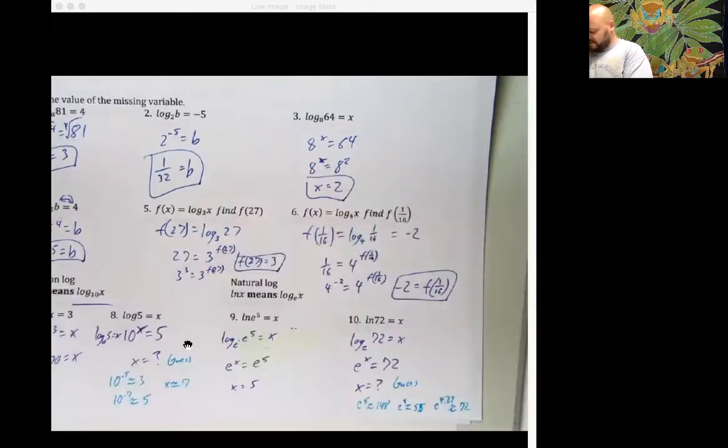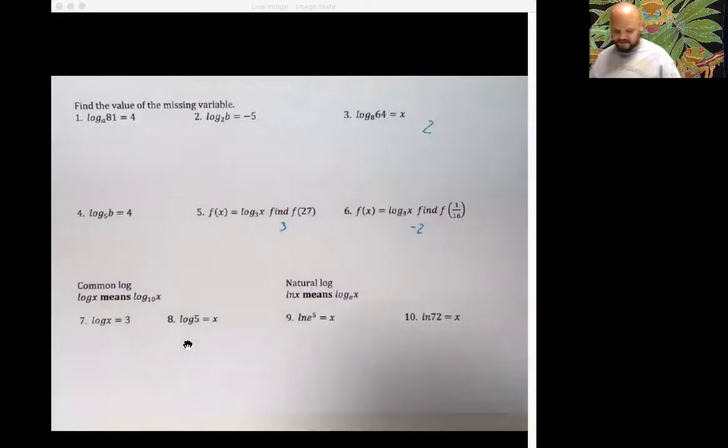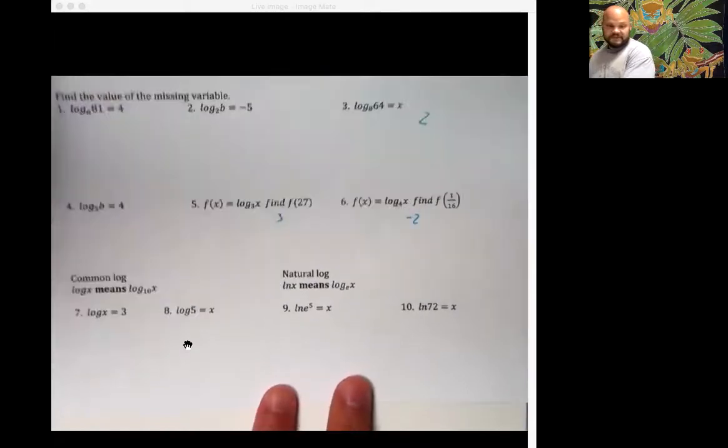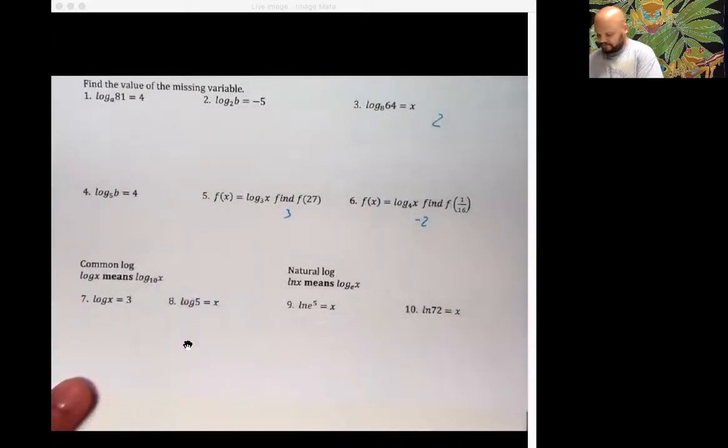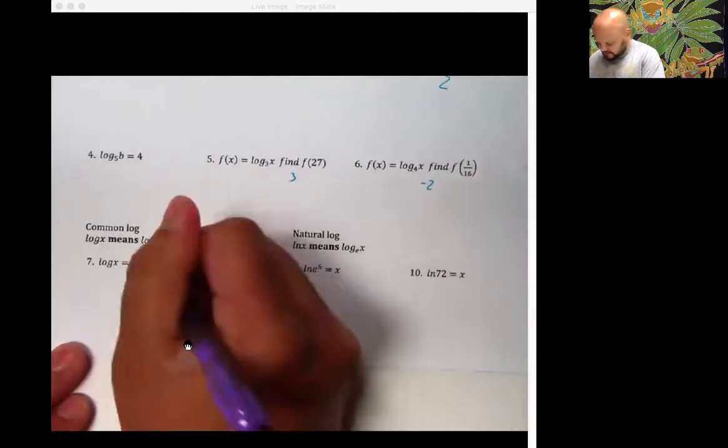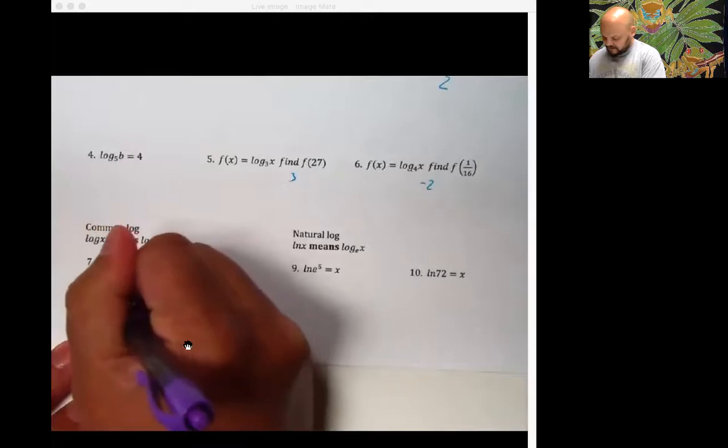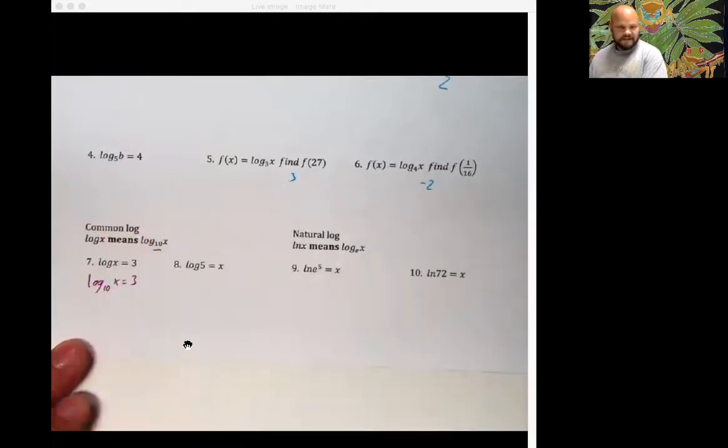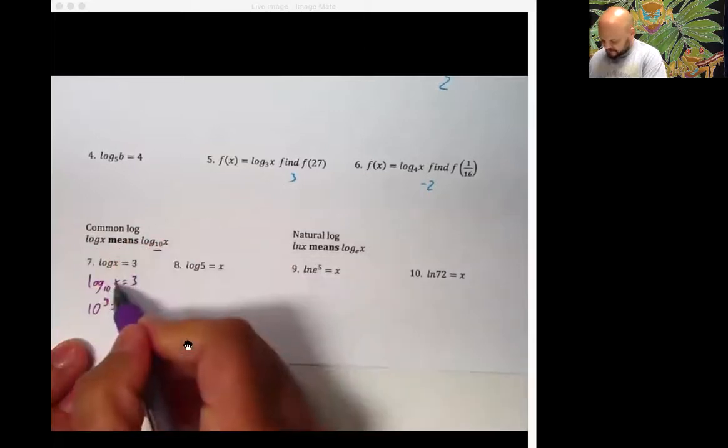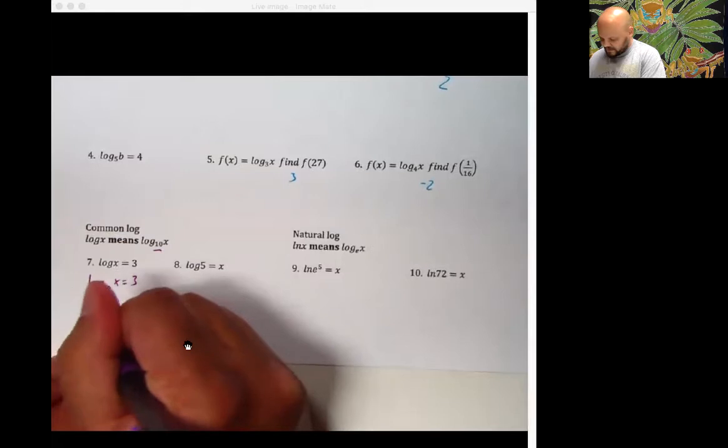Now, other stuff to do with logs. We've got a couple of ways of writing logs that we use super quickly. The first of which is the common log right here. And you'll always see it written with no base. If it doesn't have a base, that means the base is actually 10. So when I see a problem like this, I can rewrite it as log base 10 of x is equal to 3. And then I can perform my magic. 10 to the third is equal to x. Switches spots. X in the 3. The 3 is going to shrink. The 10 is going to grow. Looks like x is equal to 1000.